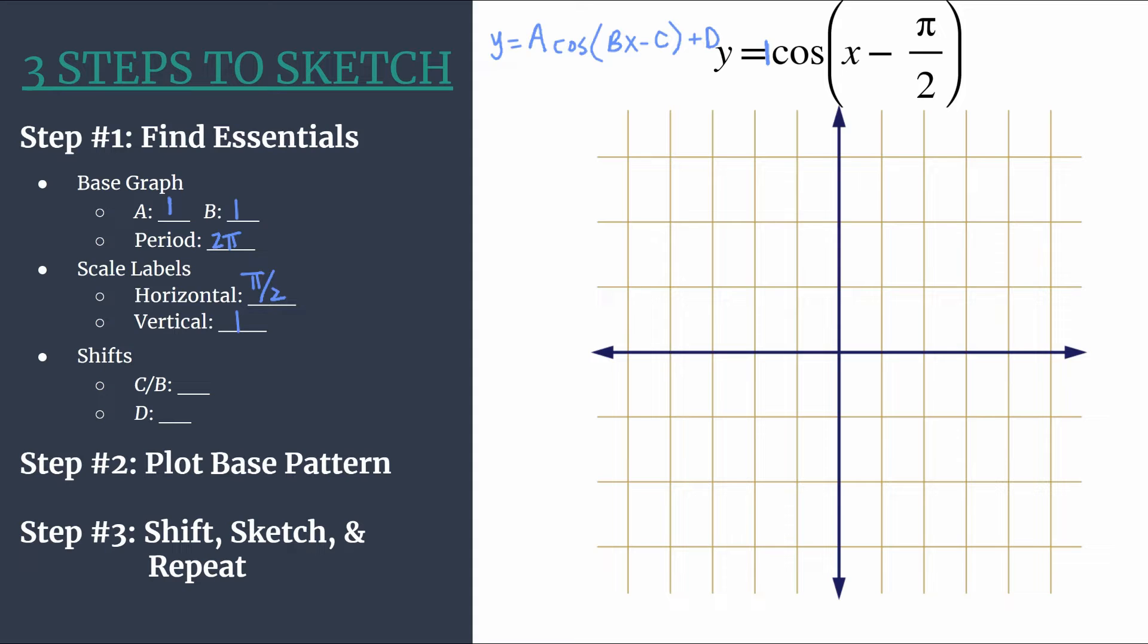So let's go ahead and label here. We have pi over two, two pi over two which reduces, three pi over two, four pi over two which reduces, five pi over two. And let's do the same on the negative side. Same values, just negative.